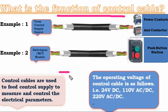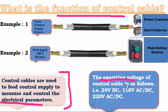What is a control cable? Control cables are used to feed the control supply to measure and control electrical parameters. The operating voltage of the control cable is 24V DC, 110V AC/DC, and 220V AC/DC — a much smaller range compared to the power cable.